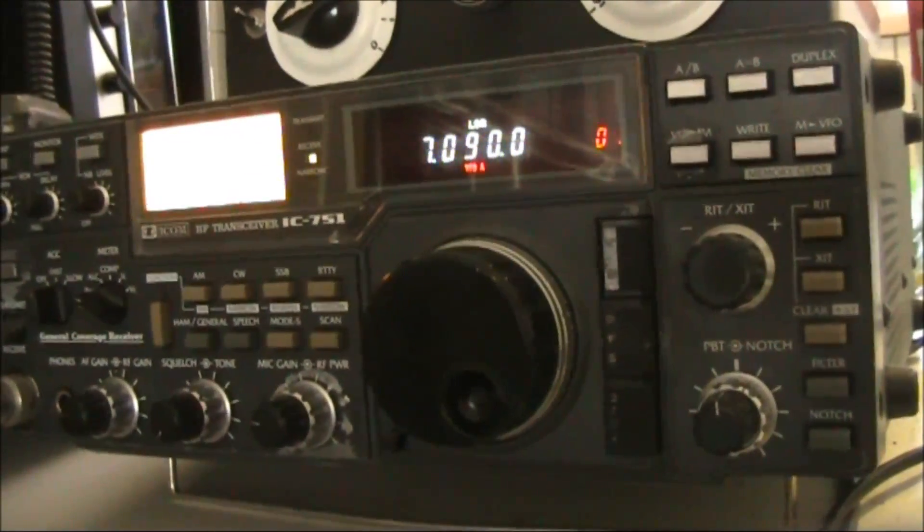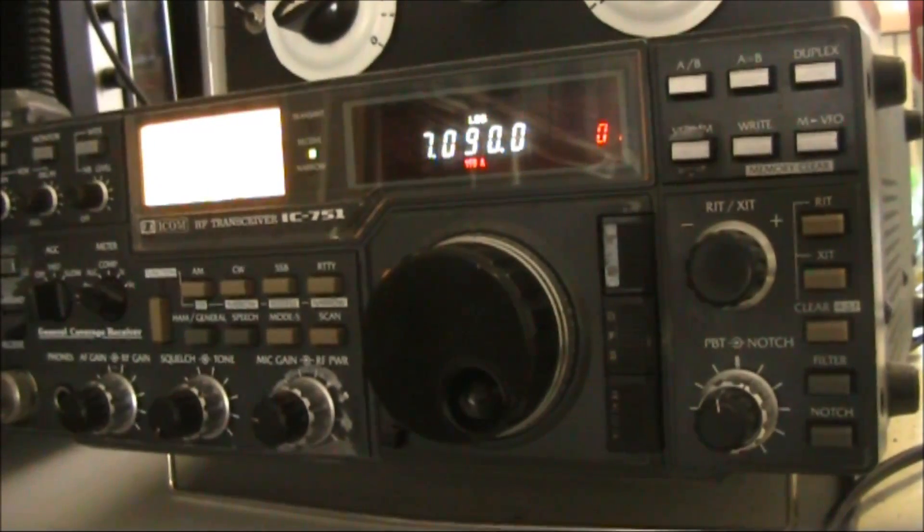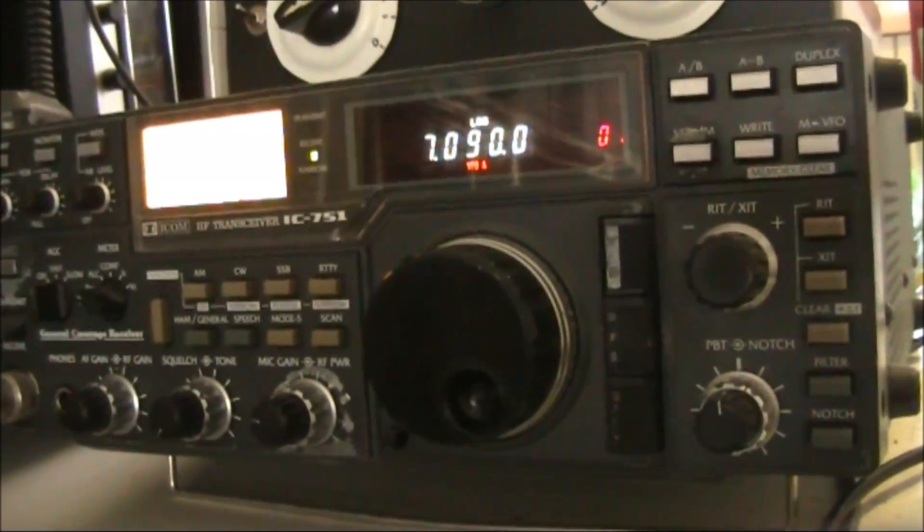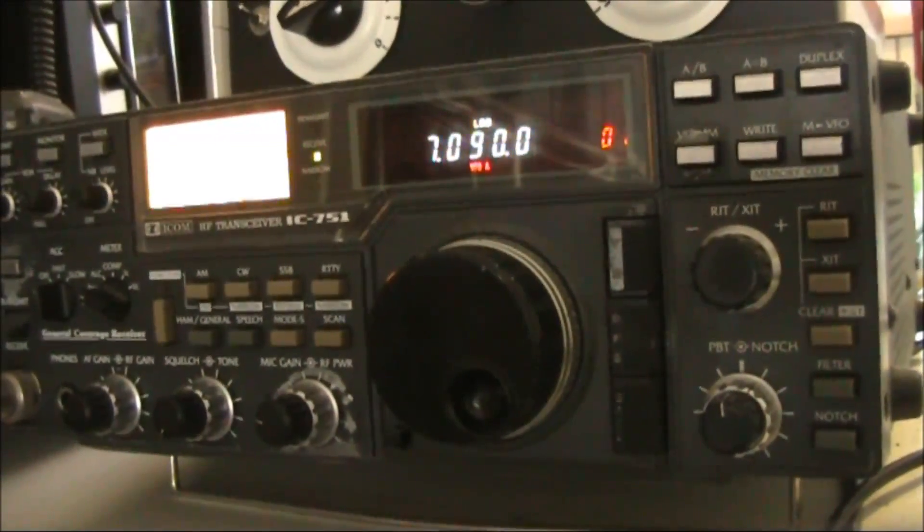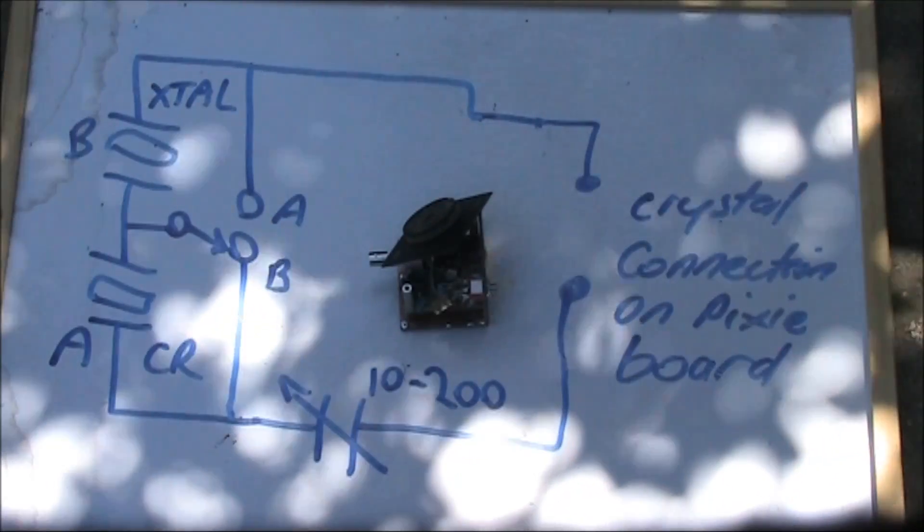So if you were to tune in a lower sideband signal on 7.090 and give them the call, then they should hear you, provided your signal is strong enough. Now we can get on air and try this out.